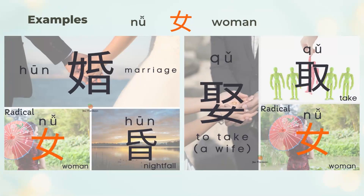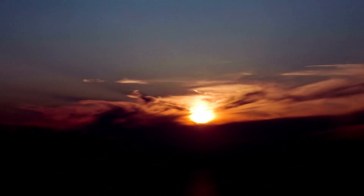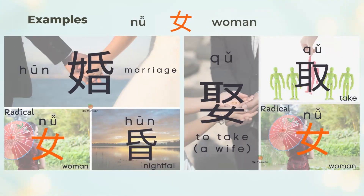婚 means marriage. The left part is the skinnier 女 (woman) and the right part is 昏 (hun). 昏 has many meanings: nightfall, dizziness, or to faint. A quick way to memorize: marriage is when a woman falls in love, feels dizzy, wants to get married, and then the night falls. 娶 means to take a wife: the upper part 取 means to take or pick, so 娶 is to take a woman and make her a wife.